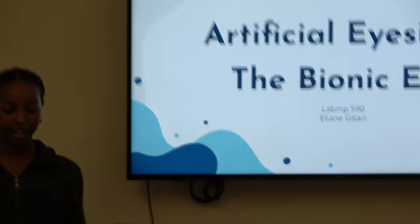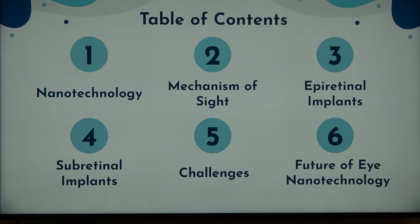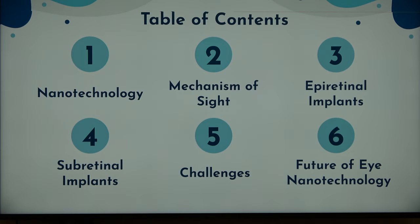This is my table of contents. I'll be talking about nanotechnology — what it is and why it's important — then the mechanism of sight: how we see, what happens when there's malfunction, and some of the key components in our eyes. Then there are two types of implants: epiretinal and subretinal. I'll also cover some challenges to eye nanotechnology, and then future advancements.